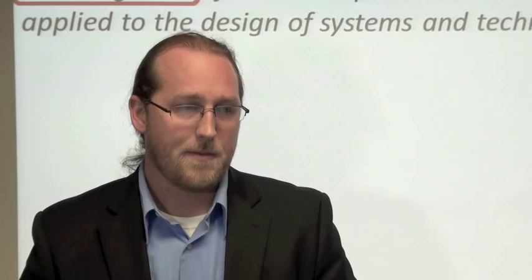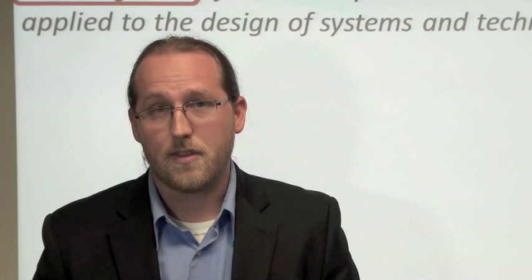So what is human factors and ergonomics? I've given you some examples, and I've told you that it's the study or investigation of human capabilities and limitations applied to the design of systems and technologies. But what does that mean? We can be good psychologists and break this down. Investigation basically means that we're going to look at things in more detail — examine them closely, try to quantify them, weigh their effects, research them, and document these things.